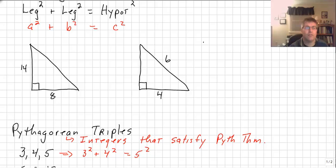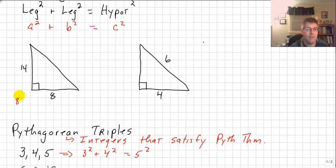We could apply this to right triangles. We might have a right triangle with legs of 14 and 8, and our Pythagorean theorem would tell us that leg squared — 8 squared — plus leg squared equals the length of our hypotenuse squared.